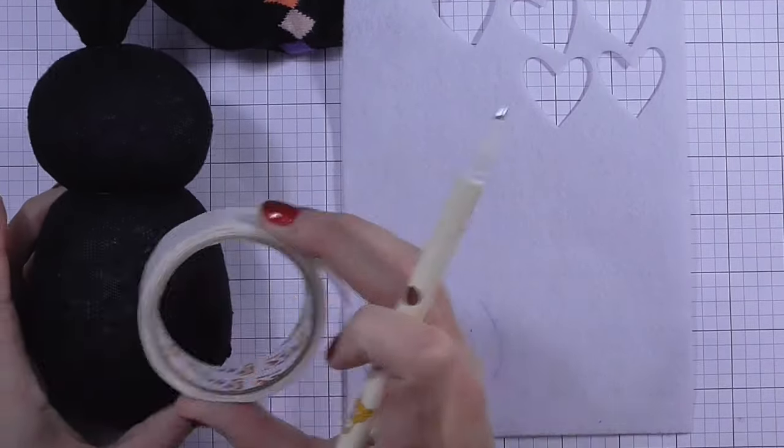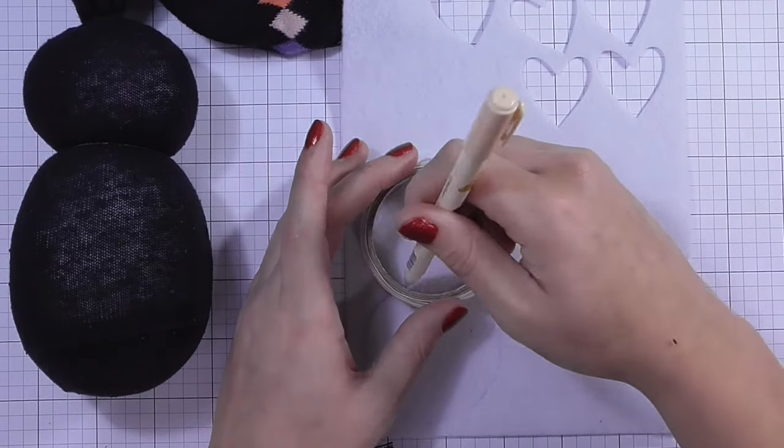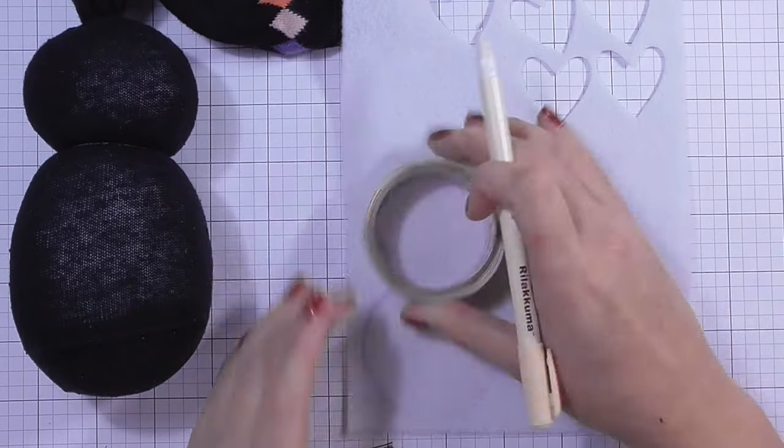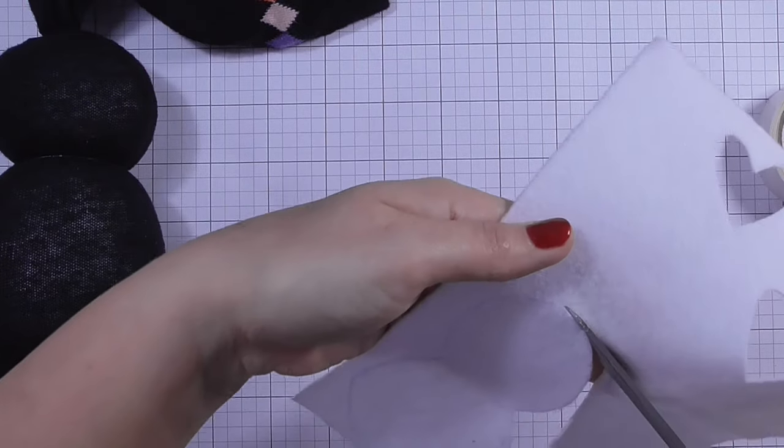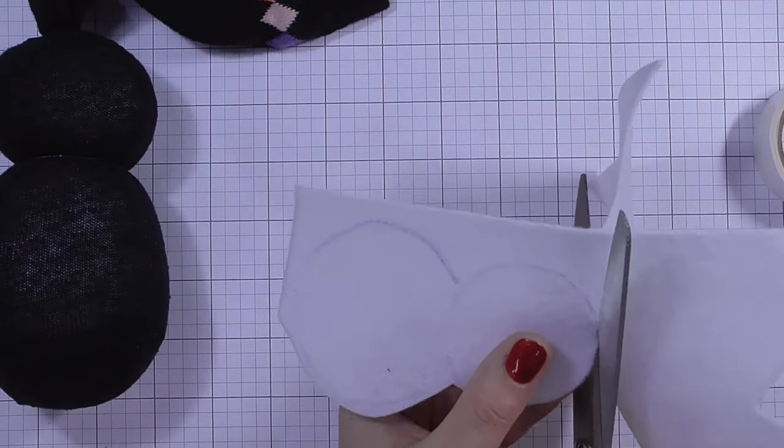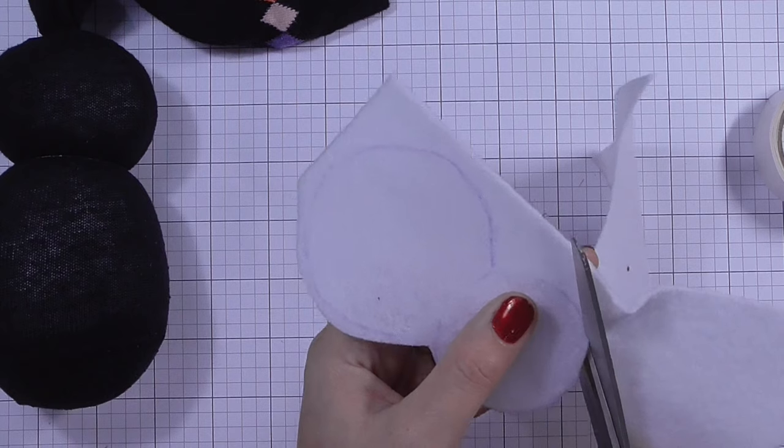I'm using something circular to draw out two circles, one slightly bigger and one slightly smaller, on some white felt that I'm cutting out with my Fiskars scissors.